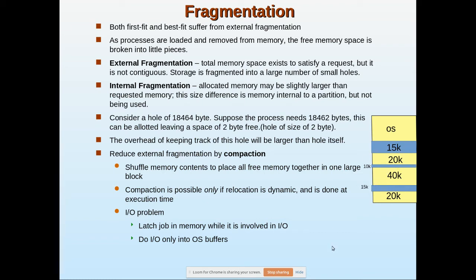So in external fragmentation, space exists but we are still not able to assign it to the incoming process. Total memory space exists to satisfy a request but it's not contiguous — storage is fragmented into a large number of small holes. This can be resolved by compacting: moving processes up so the holes come down, combining 15k, 5k, and 10k into one big 30k hole. However, moving processes disturbs the relocation register, and the user program has to be recompiled.